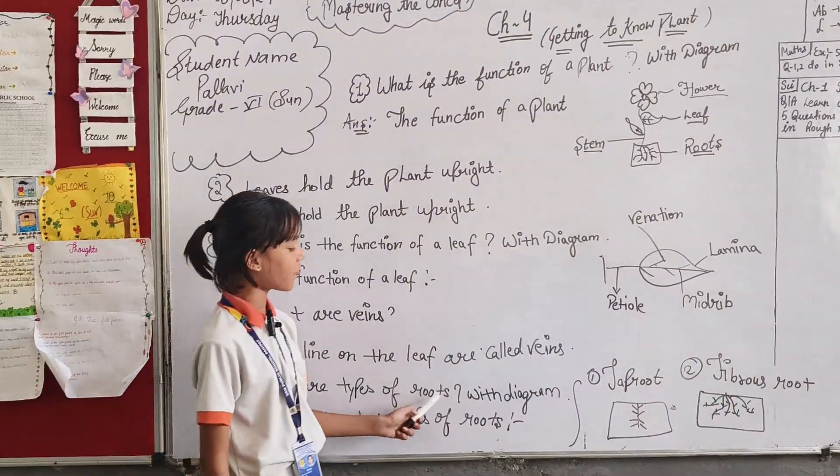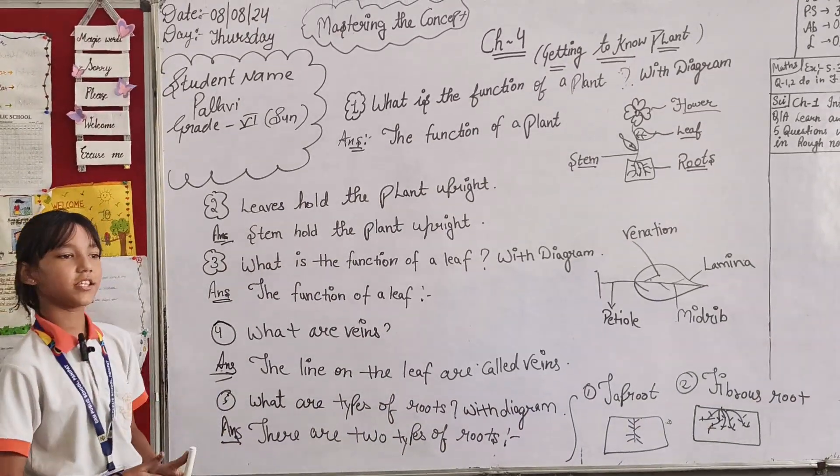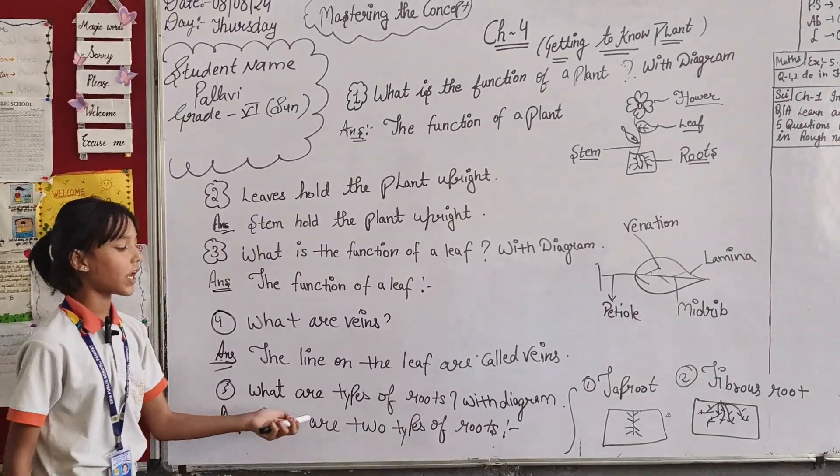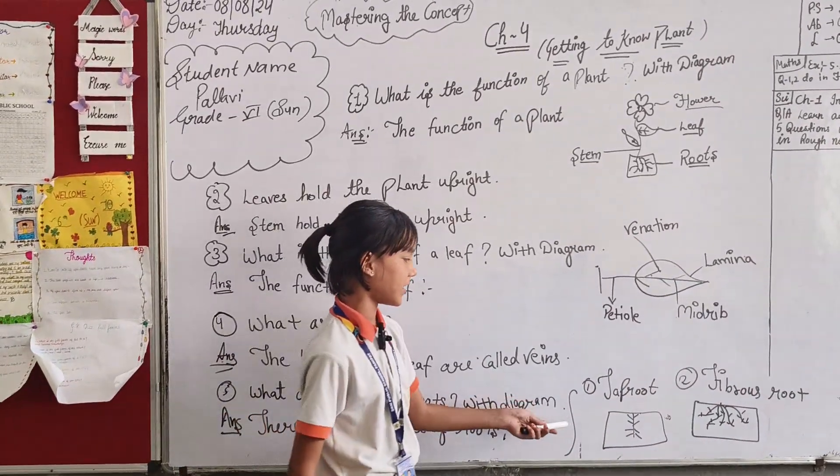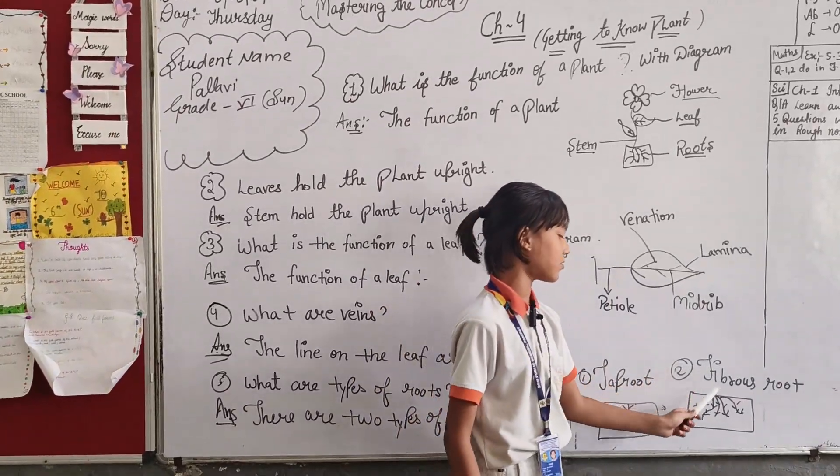Fifth, what are the types of roots with the diagram? Let's tell you how many types of roots there are. With the diagram, there are two types of roots. Root is two types. First is tap root, second is fibrous root. Tap root is like this and fibrous root is like this.